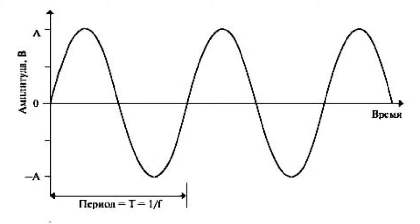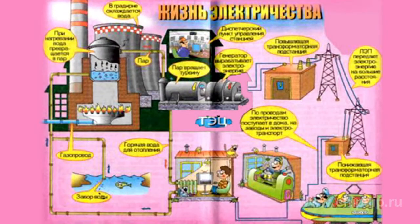The number of such AC cycles per second is called frequency. It is measured in special units called Hertz. In Europe, a 50 Hz frequency is used, meaning that electrons change the direction of motion 100 times per second.